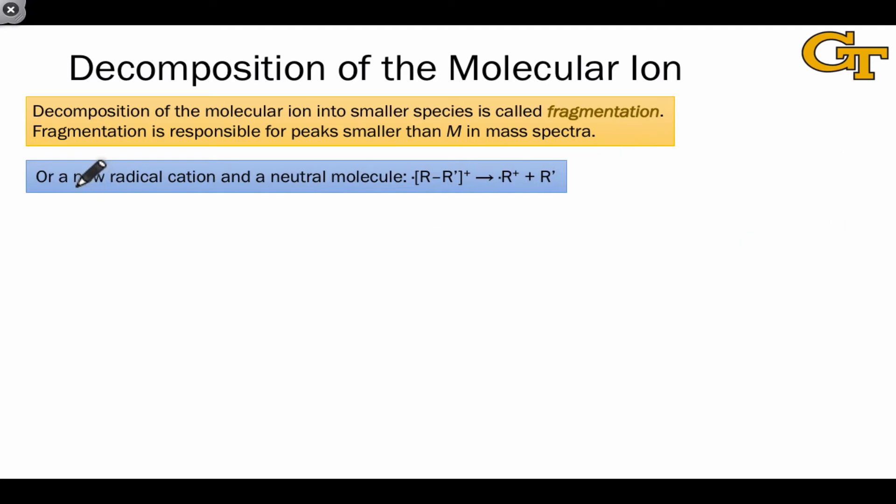The second type or class of fragmentation involves the formation of a new radical cation and a neutral fragment that we don't observe directly, but that we can infer as a difference between peaks. Elimination type reactions are often responsible for this kind of fragmentation.